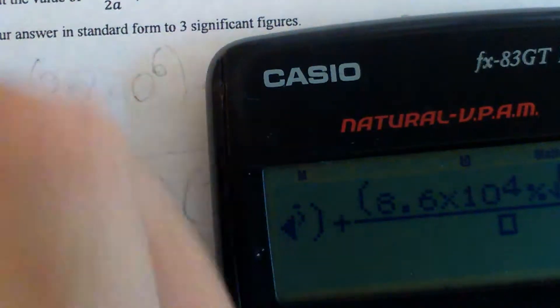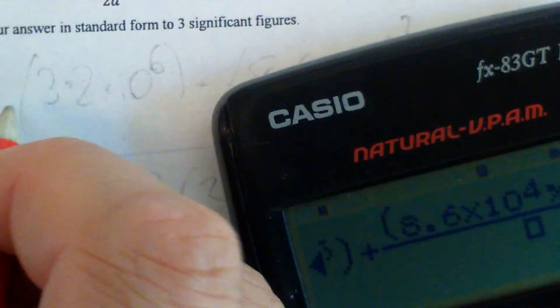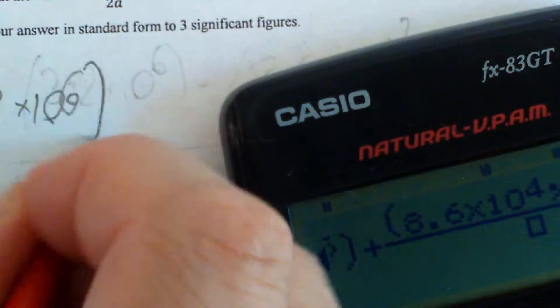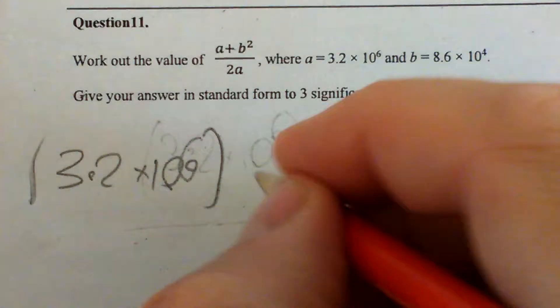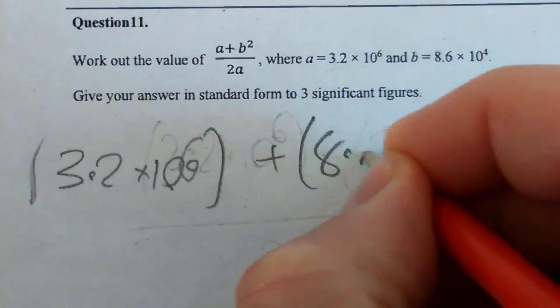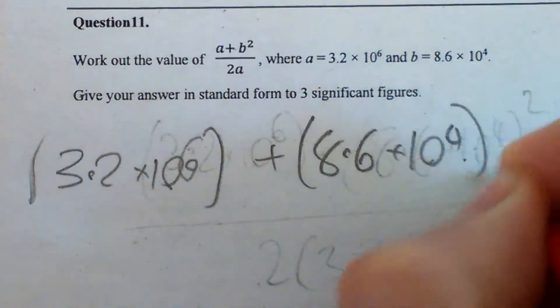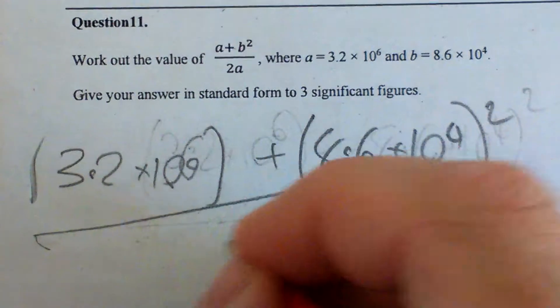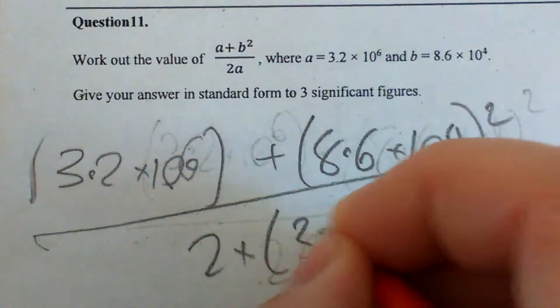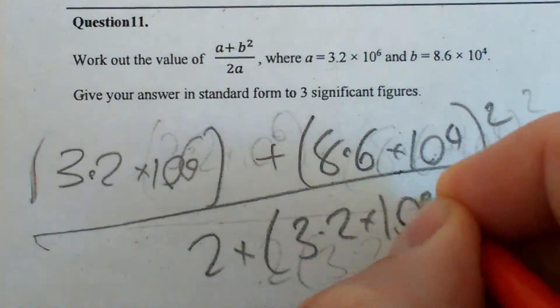Now I'm just going to substitute these in, but every time I put one of these numbers in, I'm going to put them in brackets. So a is 3.2 times 10 to the power of 6, plus b is 8.6 times 10 to the power of 4, all of this squared, all of this over 2 times 3.2 times 10 to the power of 6.